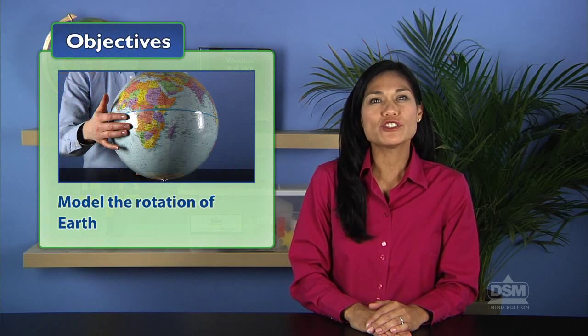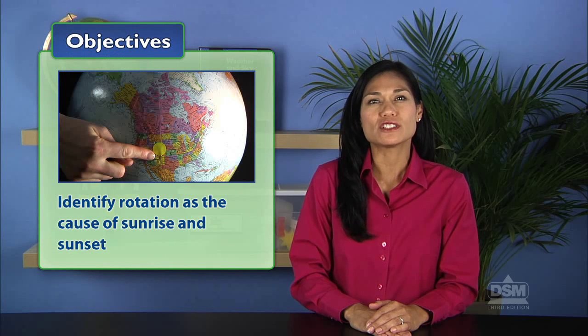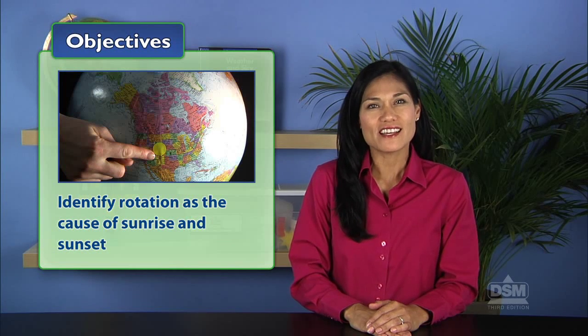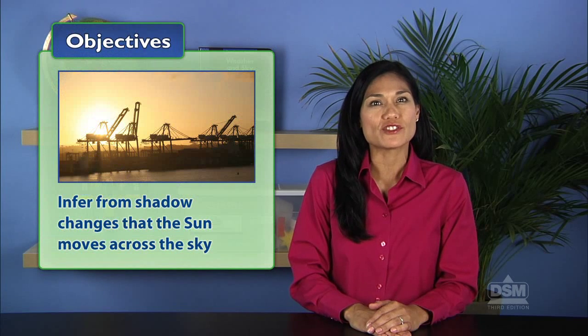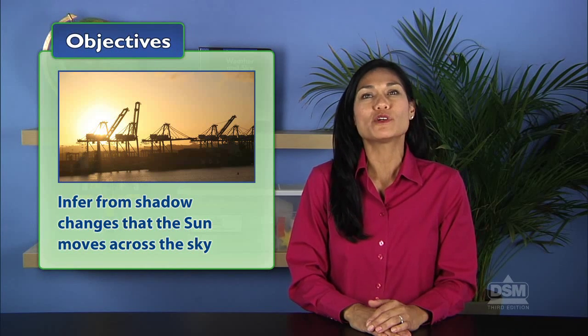They first model the rotation of Earth and identify rotation as the cause of sunrise and sunset. Finally, they infer from shadow changes that the sun appears to move across the sky.